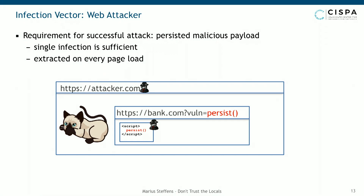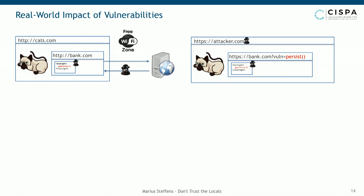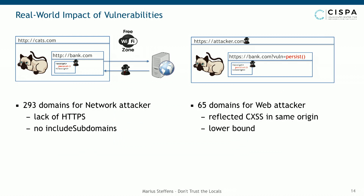Having these two infection vectors, we can evaluate our 418 found cases of persistent client-side XSS. We found that 290 domains are susceptible to our notion of a network attacker, because they either completely lacked HTTPS adoption or missed the includeSubDomains flag. As for the web attacker, we looked for reflected client-side XSS vulnerabilities and found that 65 domains had end-to-end exploitability — both a reflected client-side XSS and a persistent client-side XSS. This is a lower bound, since a Whitehead security report indicates every third application suffers from XSS, and a single infection is all that's needed.